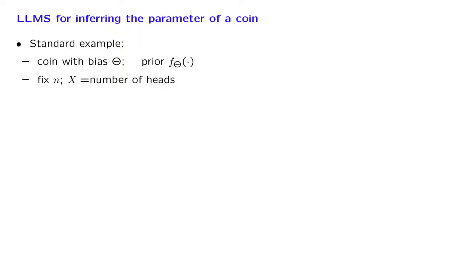Let us now go through another example, which will be a little more challenging. We're going to revisit an old problem. We have a coin that has an unknown bias theta, and we have a prior distribution on this theta. We fix some positive integer n, we flip the coin n times, and we record the number of heads. On the basis of the number of heads observed, we wish to estimate the bias theta of the coin.